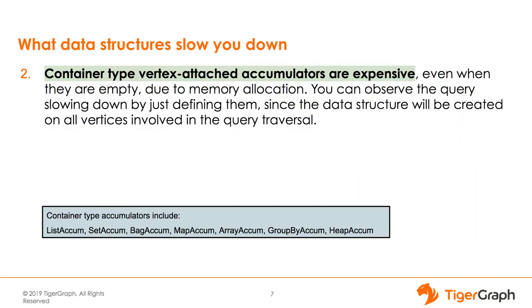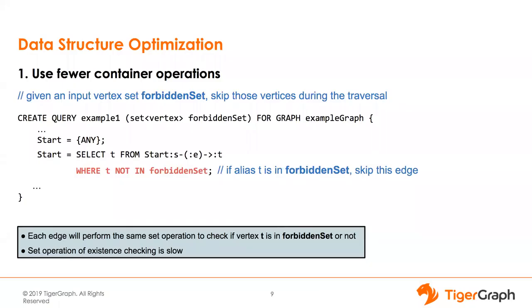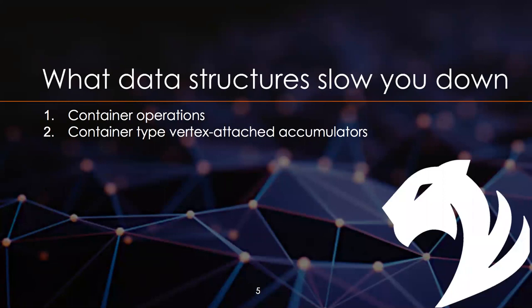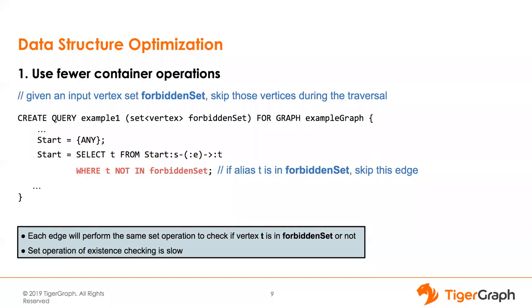So now let's see how we can avoid doing that. There are five things I will talk about today for data structure optimization. First, I'll show an example of how to use fewer container operations, since container operations are the first thing that can slow you down.